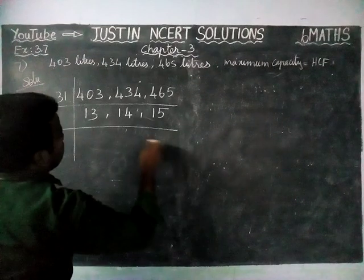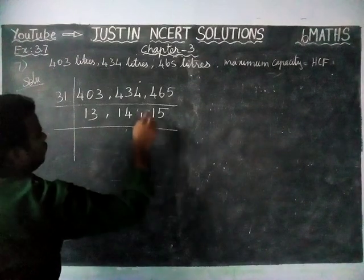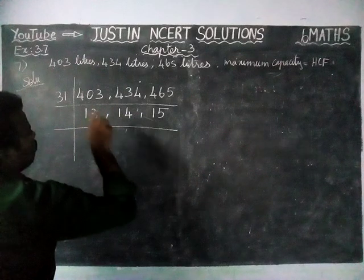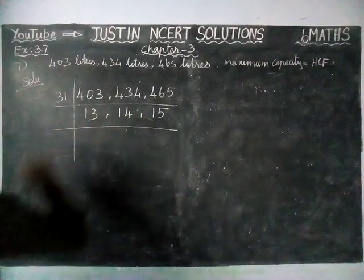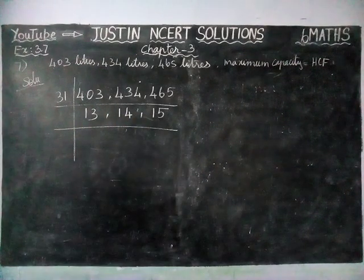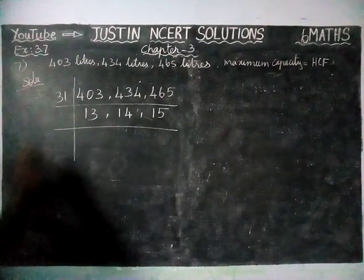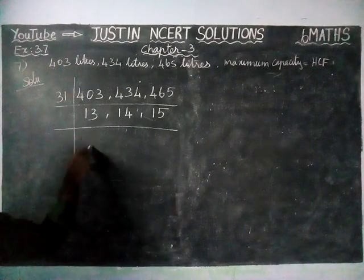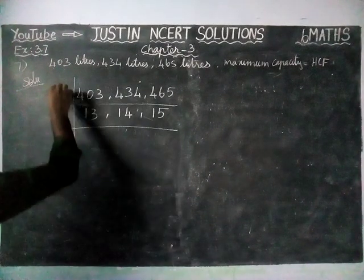Now the resulting values are 13, 14, and 15. There is no common divisor other than 1, so we stop here. We cannot divide further — only 1 is a common divisor for all these numbers.